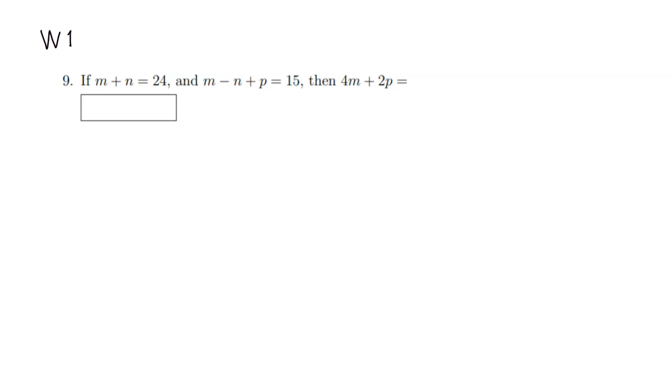All right, so you have m plus n is equal to 24, so that's the first clue. Second clue: m minus n plus p is equal to 15.